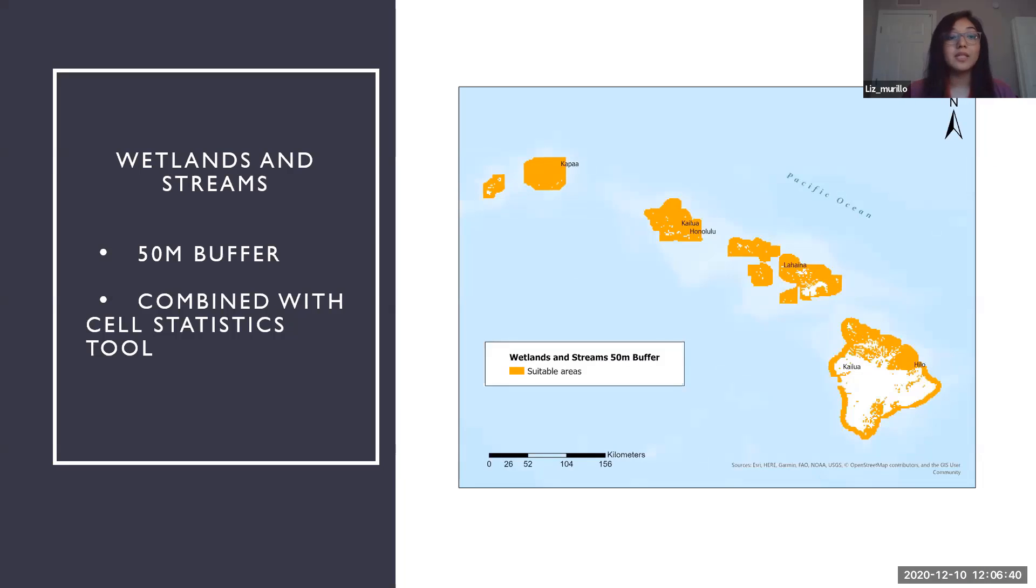Then when I went ahead and looked at the wetlands and streams data, I did download the data sets individually and then I combined them. I also added a 50 meter buffer because mosquitoes are known to fly up to 50 meters from their original water source. So I wanted to take into account that traveling distance. Here we have wetlands and streams with the 50 meter buffer added.